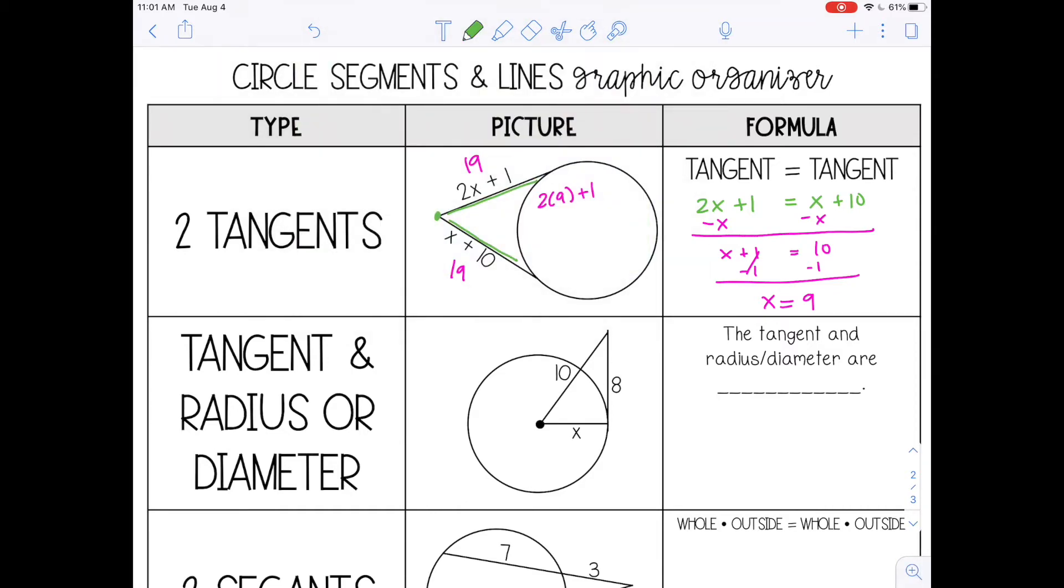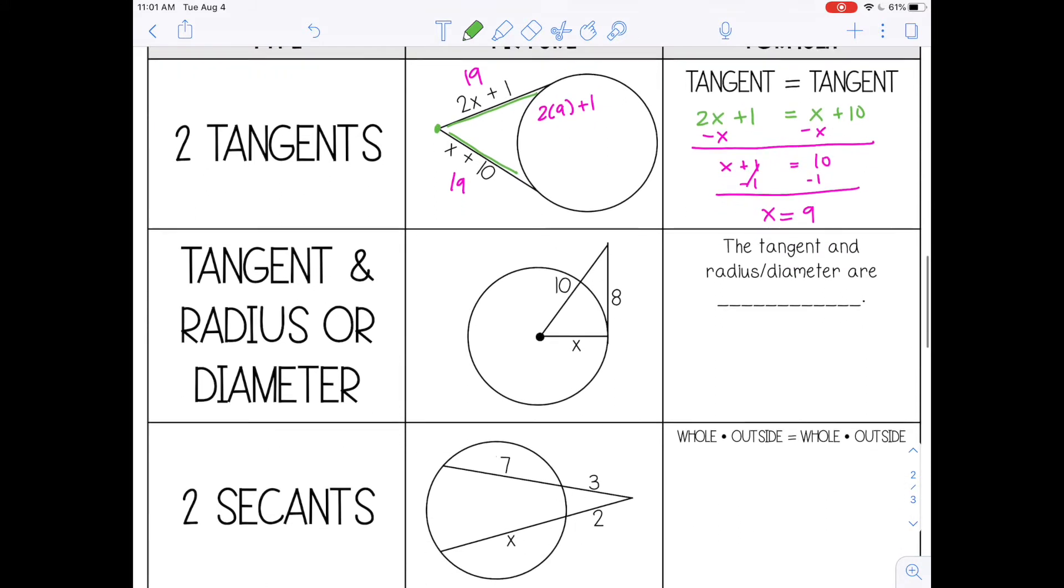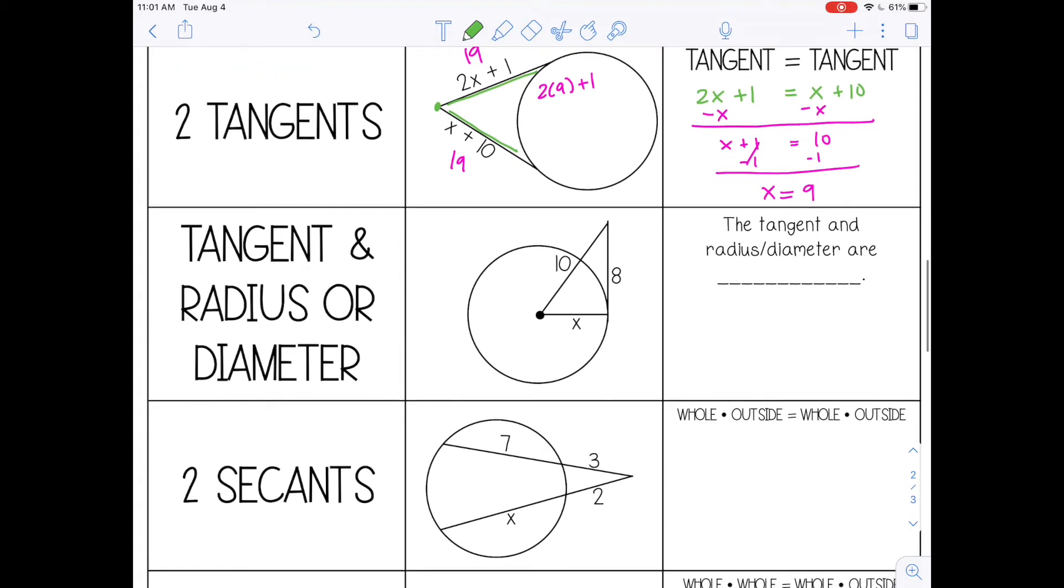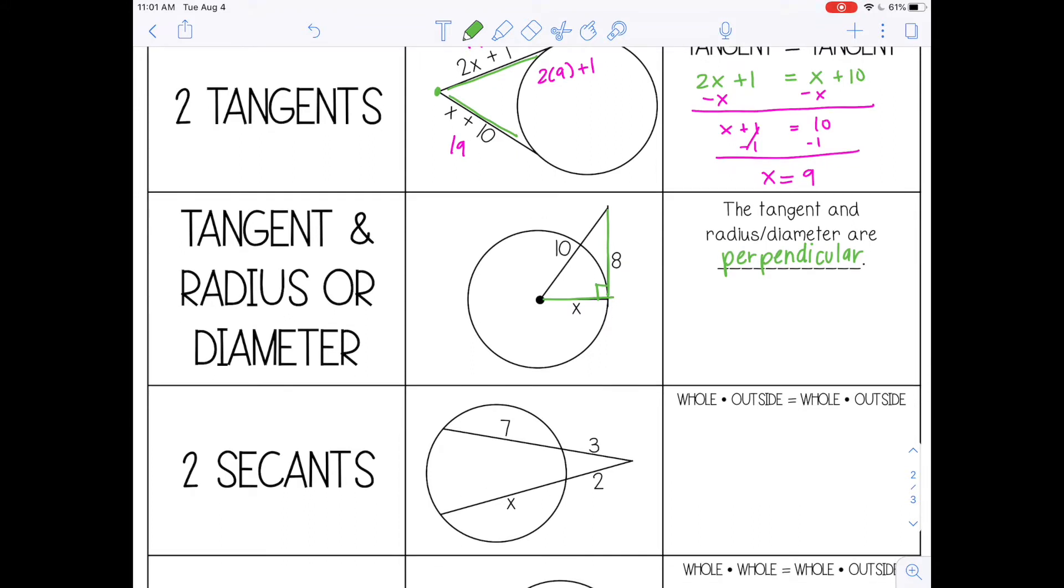The next one is when a tangent and a radius or a diameter meet. They're going to be perpendicular. So here is a tangent segment. Here is a radius. They're perpendicular, which means they form a right angle. So in this example, I have a right triangle, so I can use the Pythagorean theorem to solve for the length of the radius.